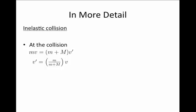Therefore, we can solve and say that the final speed is equal to the ratio of the bullet mass over the sum of the two masses times the bullet's initial speed.